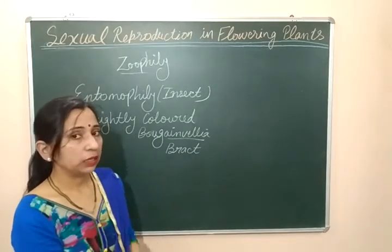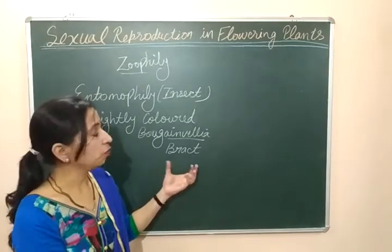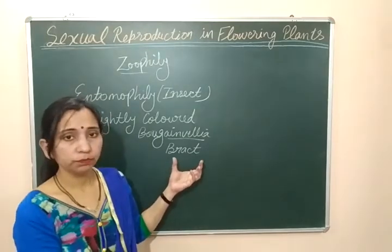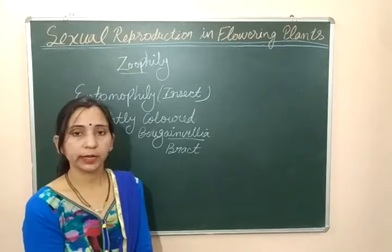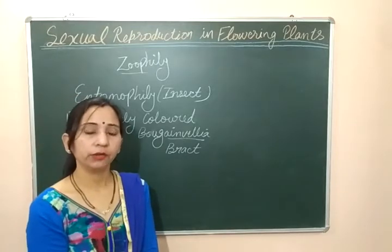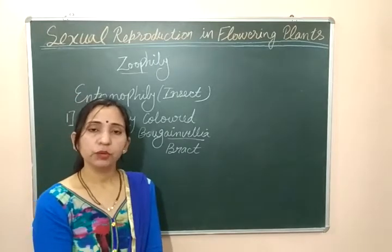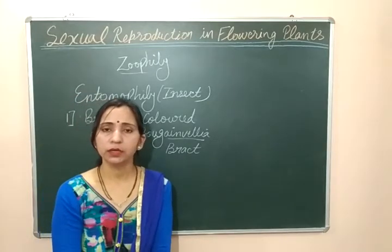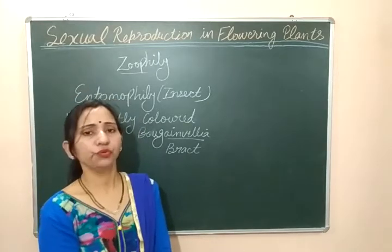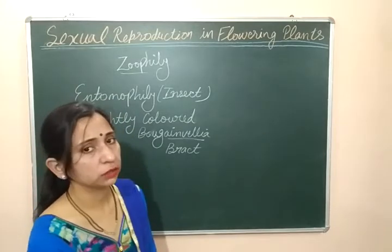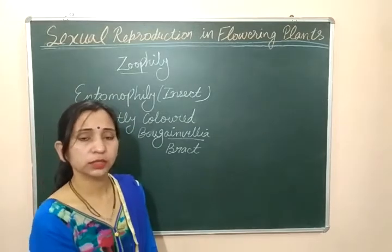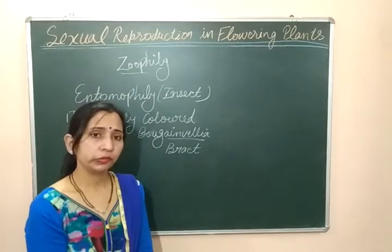If the flower is not brightly colored, then some other parts of the flower are brightly colored. Like in the case of Bougainvillea, the bracts are brightly colored and they help in attracting the insects. Another example is Euphorbia, where the leaves are brightly colored so that insects can be attracted.